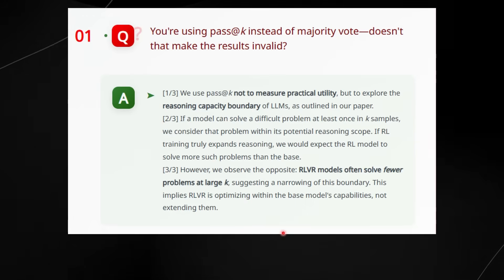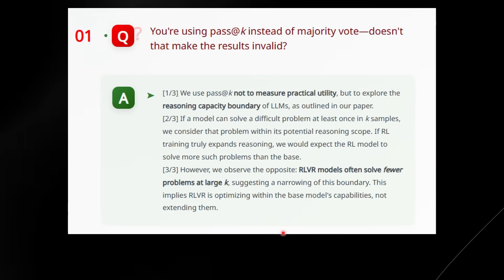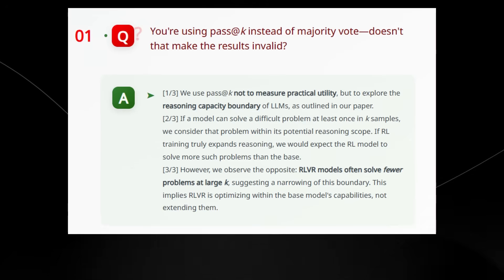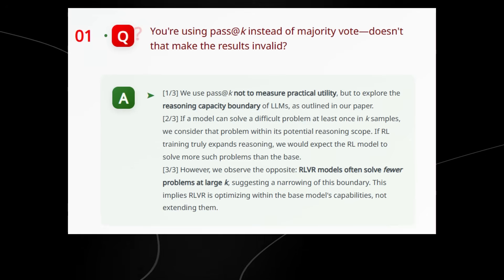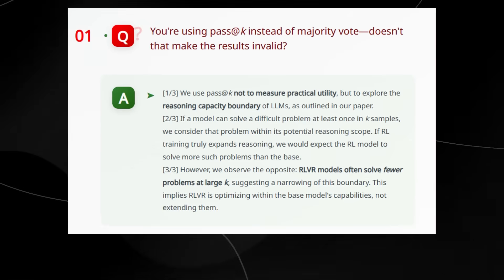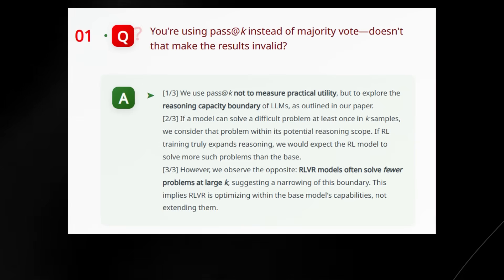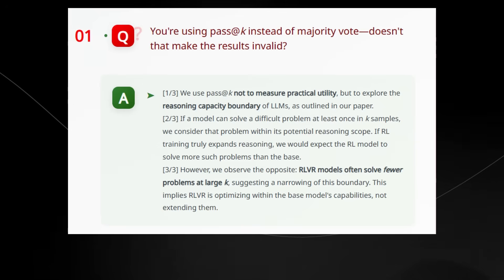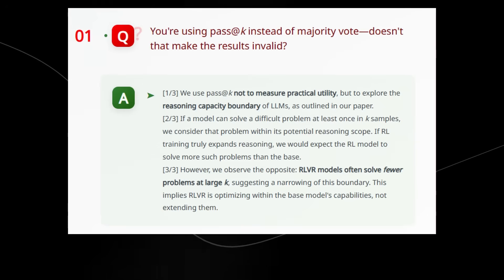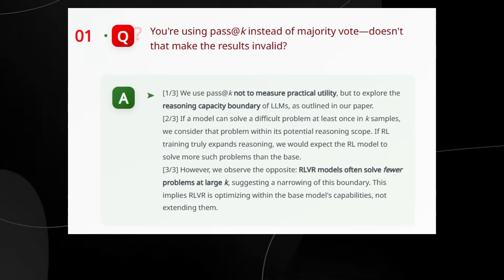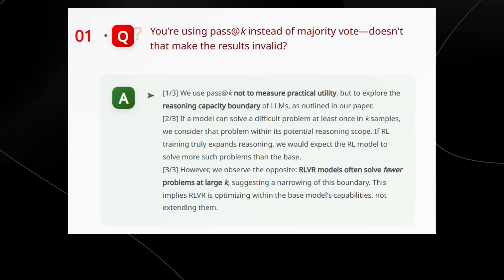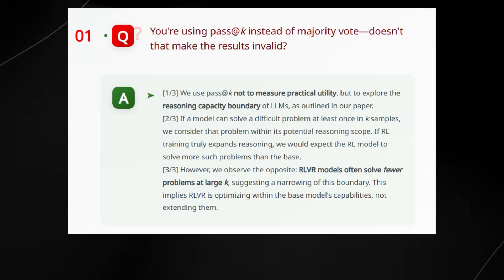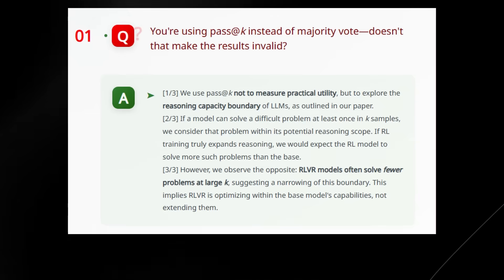Now there's also a Q&A from the researchers that did the paper. They essentially state here that, 'Why are you using pass at k instead of majority voting, and whether that makes their findings invalid?' So they're basically saying that real world models don't get to try 256 times, so why is this metric even useful? And they're basically saying that look, this is not about real world performance, it's about theoretical potential. The authors are clearly stating that they use pass at k to not judge if a model is useful in the world, but to find out how far a model could go if given enough tries.